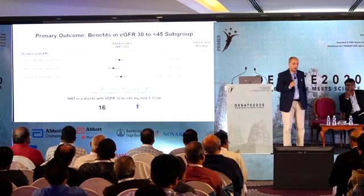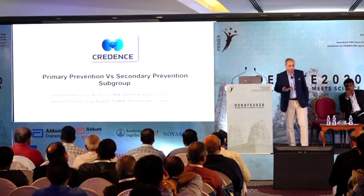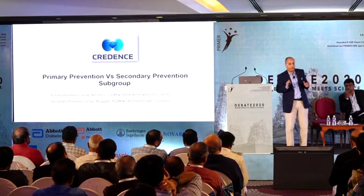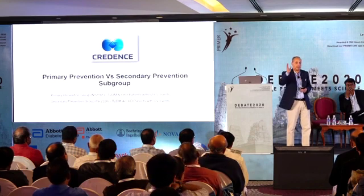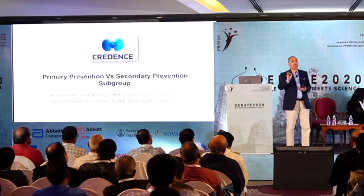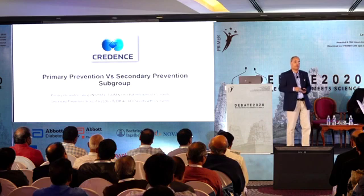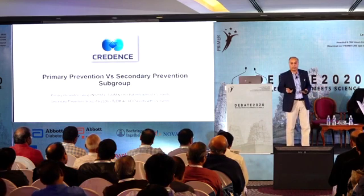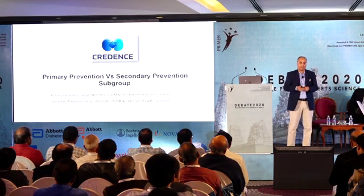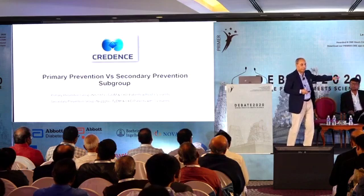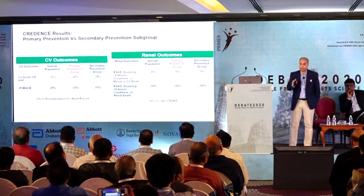Regarding primary versus secondary prevention: in type 2 diabetes, the concept of primary prevention is difficult to apply since we cannot date the onset of diabetes, and many patients already have microvascular complications at diagnosis. In theory, all type 2 diabetic patients fall under secondary prevention. However, in subgroup analysis, CREDENCE showed benefit both in those with and without established kidney disease — covering both primary and secondary prevention contexts.